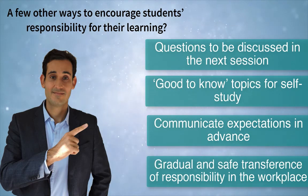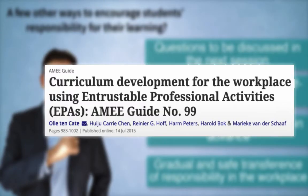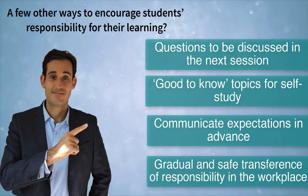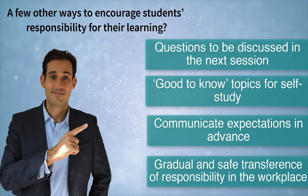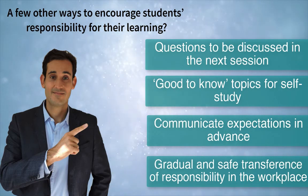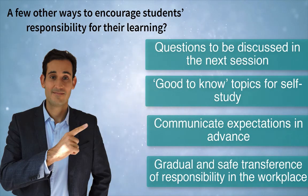In workplace settings, make students responsible for their patients and for finding solutions to their problems. Observation from educators is critical for a gradual and safe transference of responsibility. The concept of entrustable professional activities (EPAs) is becoming quite popular as a way to formally transfer responsibility to students in the workplace — it would be a good idea to further research on this. For students interested in teaching or research, letting them have some teaching responsibility or participate in current research projects will also make them feel more part of their professional community.